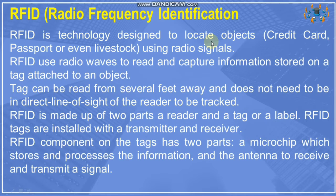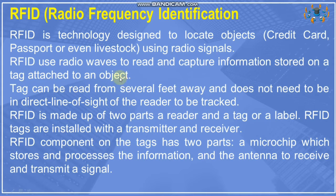Passive RFID covers a shorter range of distance, while active RFID covers a larger area of distance. RFID uses radio waves to read and capture information stored on a tag attached to an object. The tag can be read from several feet away and does not need to be in direct line of sight of the reader to be tracked.